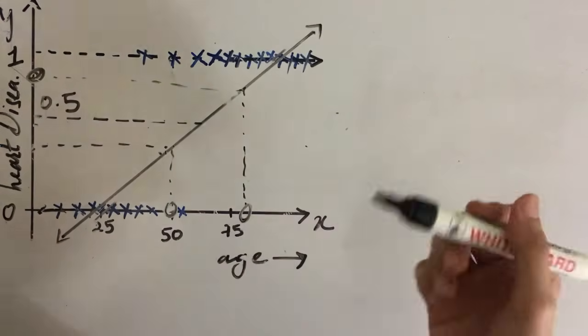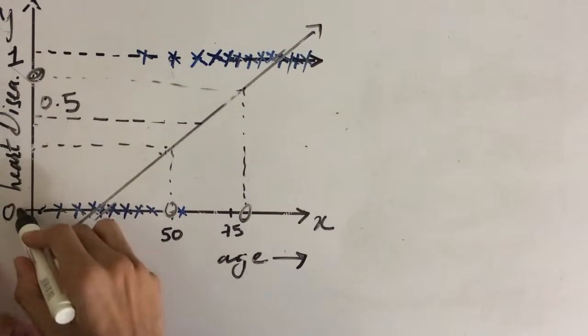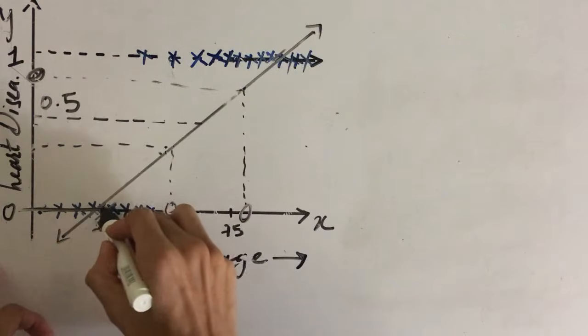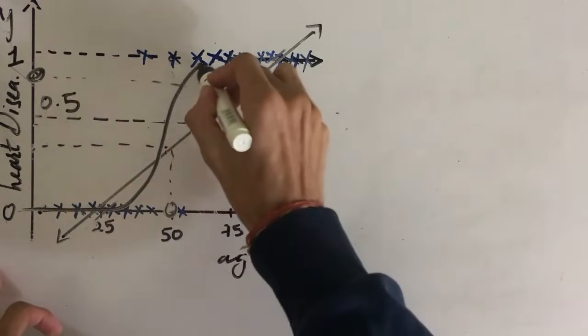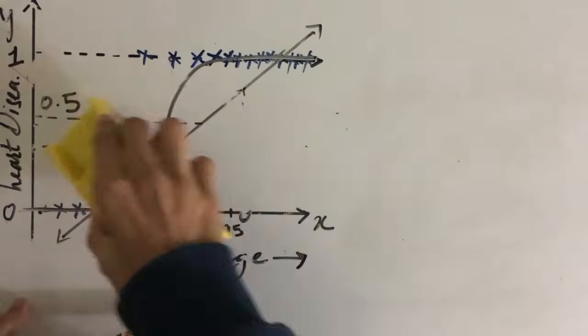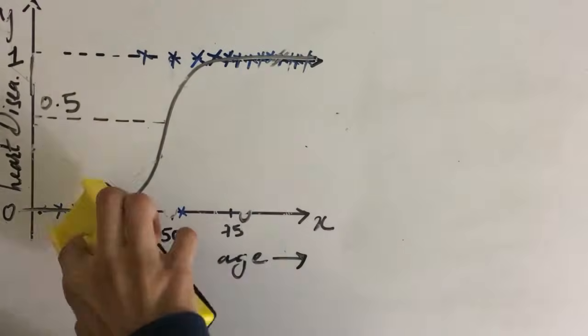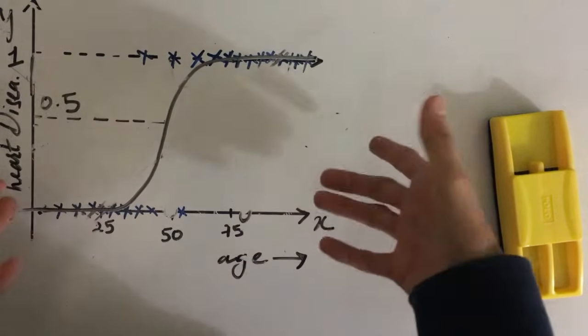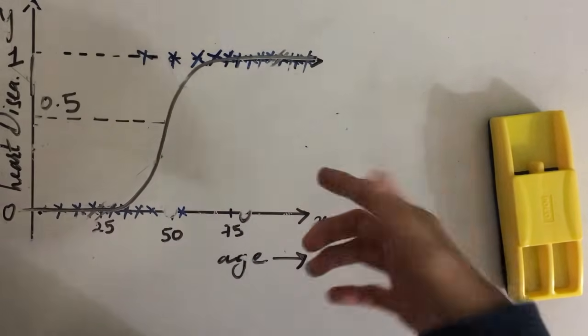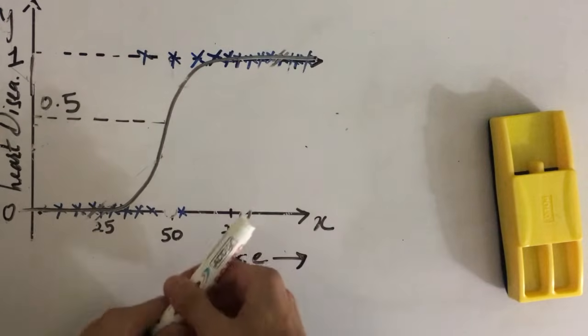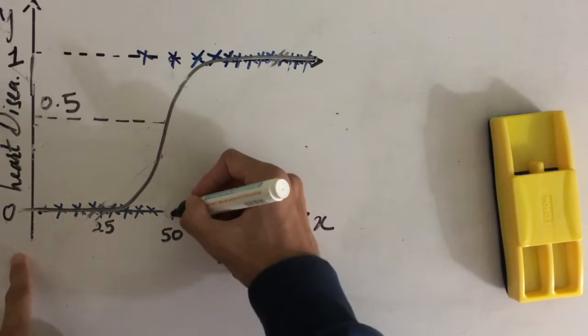One thing we can do is to draw a curve that actually fits appropriately to this dataset, like this kind of curve. So you can see that this curve actually fits appropriately to the dataset and it is also more likely to give us the right predictions.